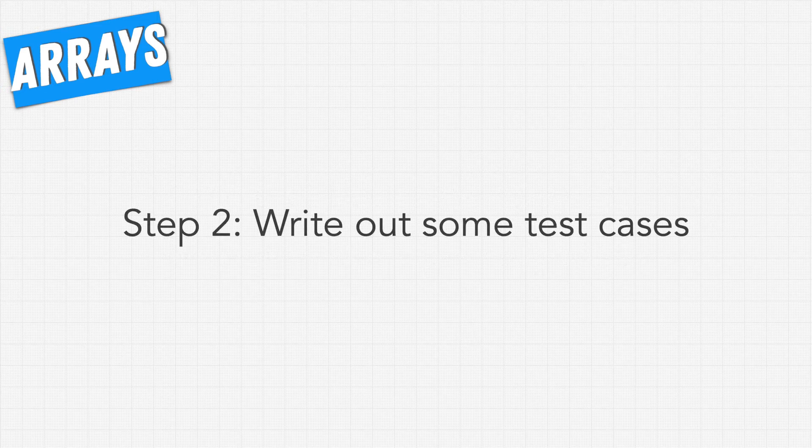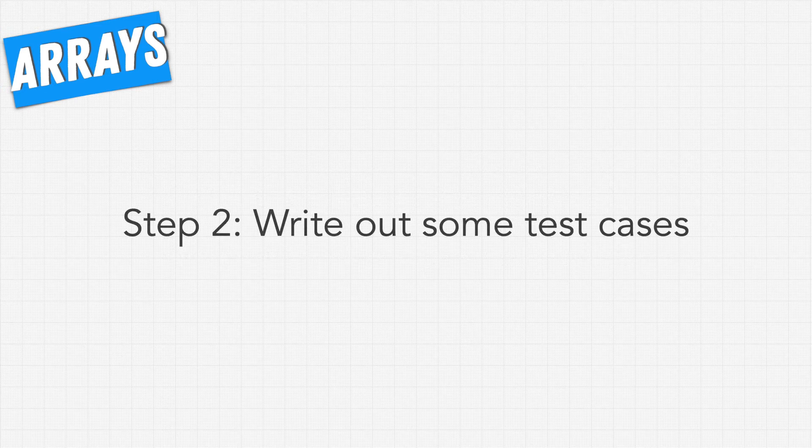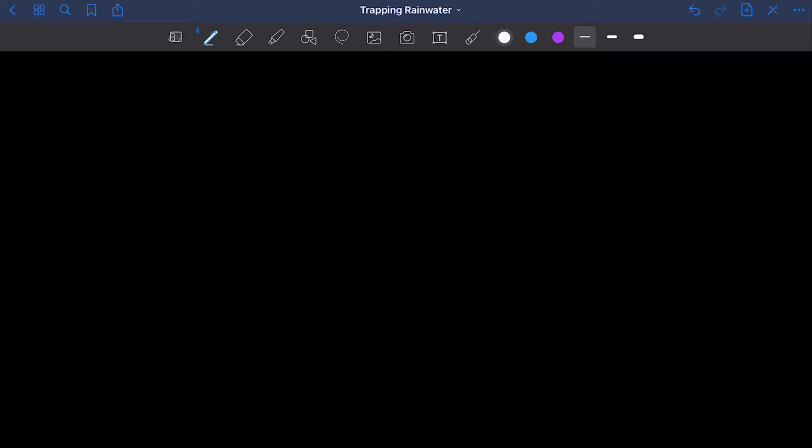So for our first test case let's actually just use that same array that we had when we first came up with an example. So here I'm going to say that it's going to be an array that gets 0, 1, 0, 2, 1, 0, 3, 1, 0, 1, 2. And remember with this one that the correct answer was 8.